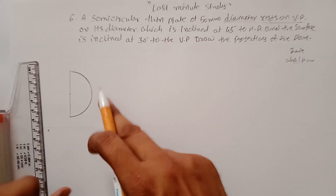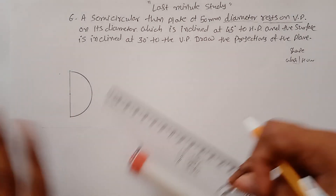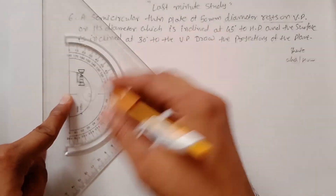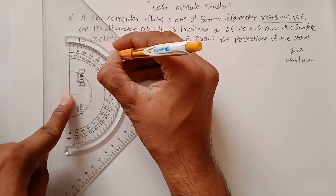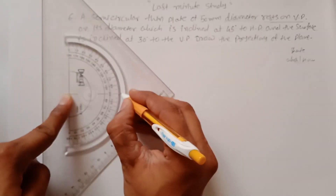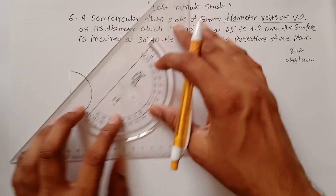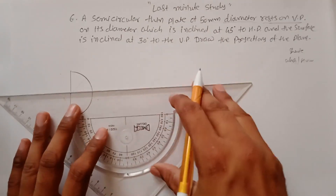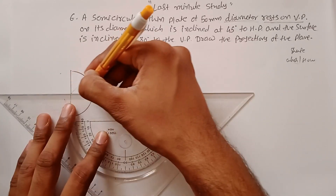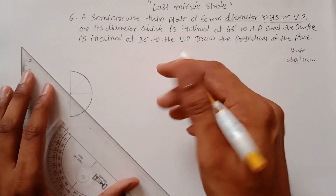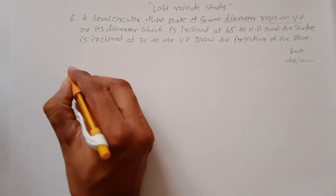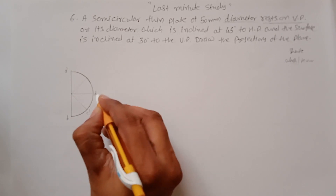This semicircle is the front view because the plane is resting on the VP. As discussed in the previous problem, divide the semicircle into four, five, or six equal parts. Label the points as A', B, C, D, and E.